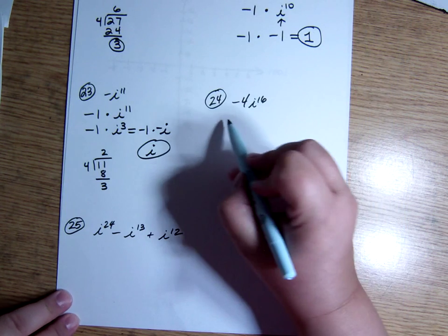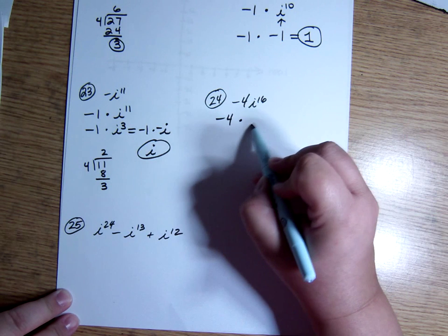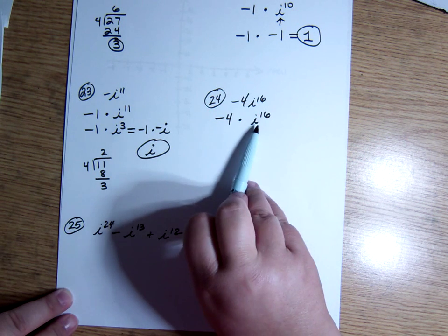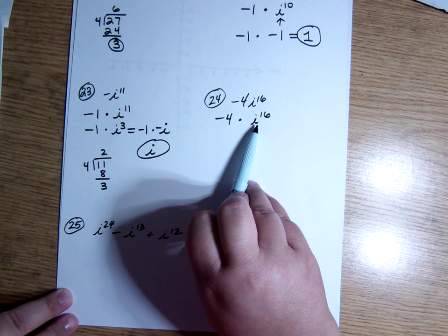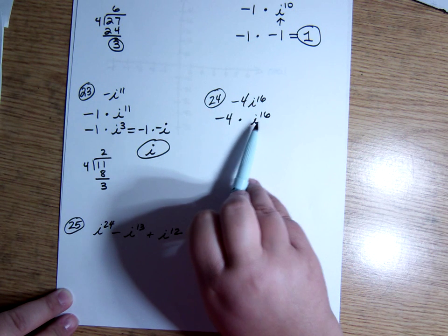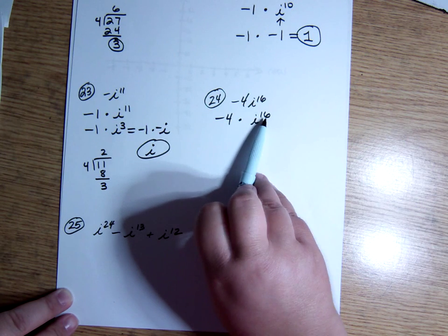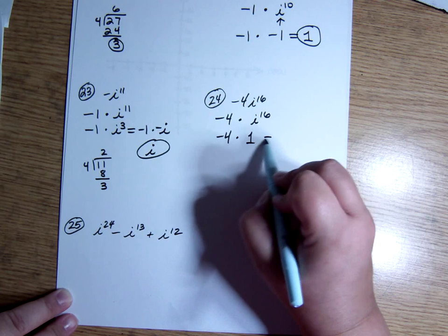Okay, here we have negative 4 times i to the sixteenth. When I divide 16 by 4, I don't have a remainder. That means, basically, I have a bunch of sets of 4. So that's 1 times 1 times 1 times 1. So this is just 1. Any multiple of 4 is just 1, in terms of the exponent. So, negative 4 times 1, which is negative 4.